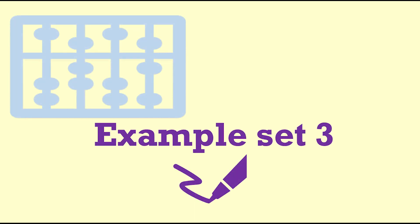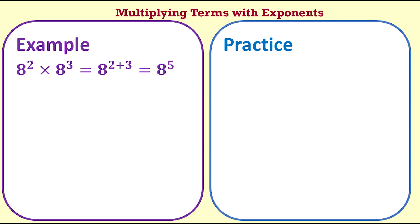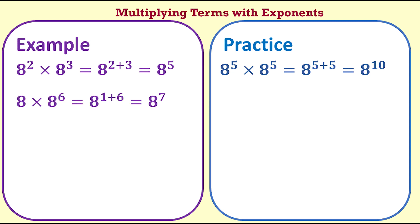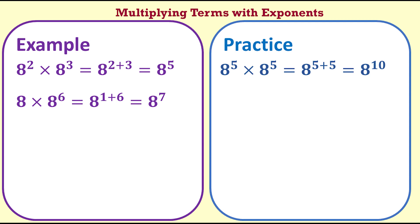Example set 3: multiplying terms with exponents. A term is one part of an operation and can include letters and numbers. 8 to the 2 times 8 to the 3 equals 8 to the 2 plus 3, which equals 8 to the 5. 8 to the 5 times 8 to the 5 equals 8 to the 5 plus 5, which is 8 to the 10. Remember to try these yourself. 8 times 8 to the 6: remember, 8 on its own with no index number is the same as 8 to the power 1, so this is 8 to the 1 plus 6, which equals 8 to the 7. 8 to the 2 times 8 equals 8 to the 2 plus 1, which equals 8 to the 3.